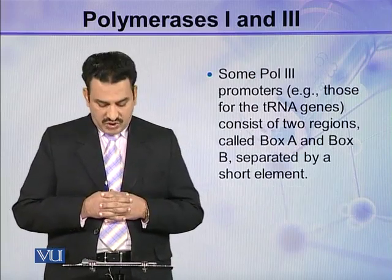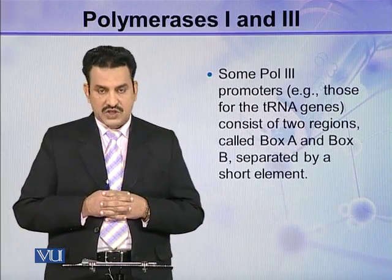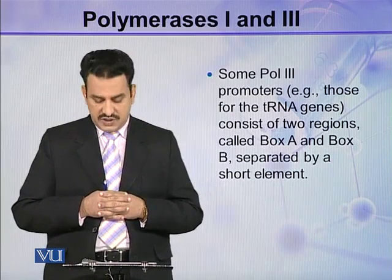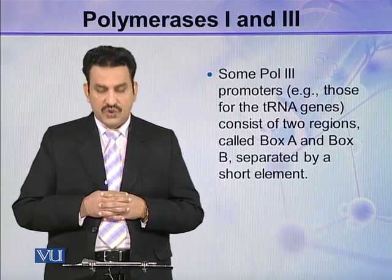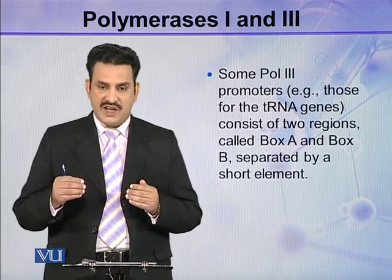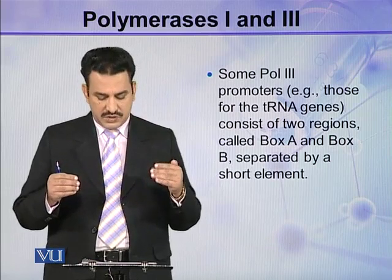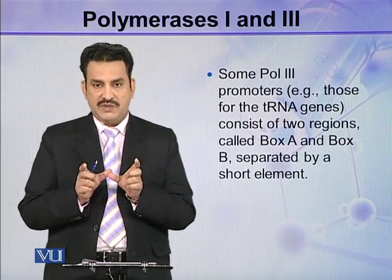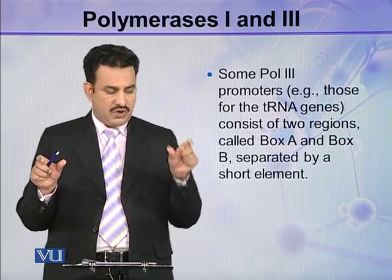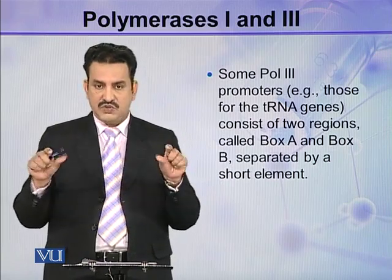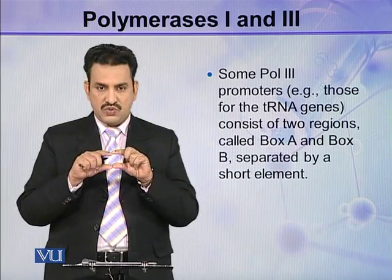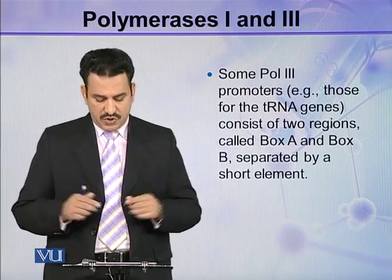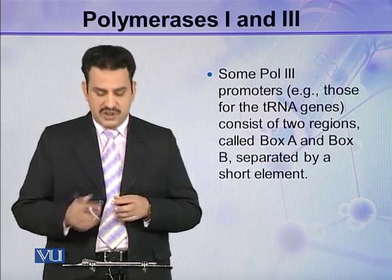Some polymerase 3 promoters, for example those for tRNA genes, consist of two regions called box A and box B, which are separated by a short element. This constitutes the promoter for a tRNA gene.